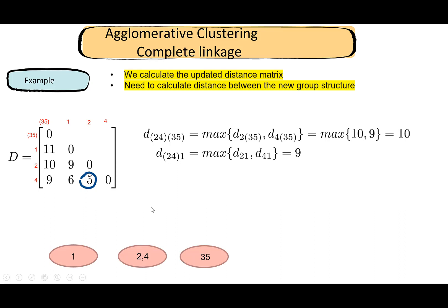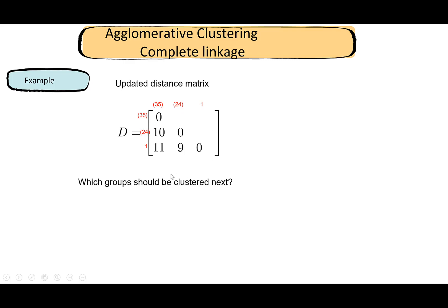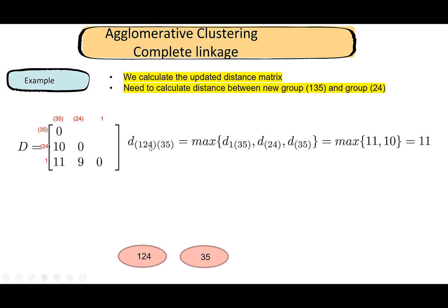We now have distances between all current groups, so we update the distance matrix to reflect the current group structure. The minimum element is 9, so we merge group {one} and group {two, four}. The remaining groups are {one, two, four} and {three, five}. To find the distance between them, we take the maximum of d({three,five}, one) = 11 and d({three,five}, {two,four}) = 10, giving a maximum of 11. That is our final pairwise distance before the last merge.